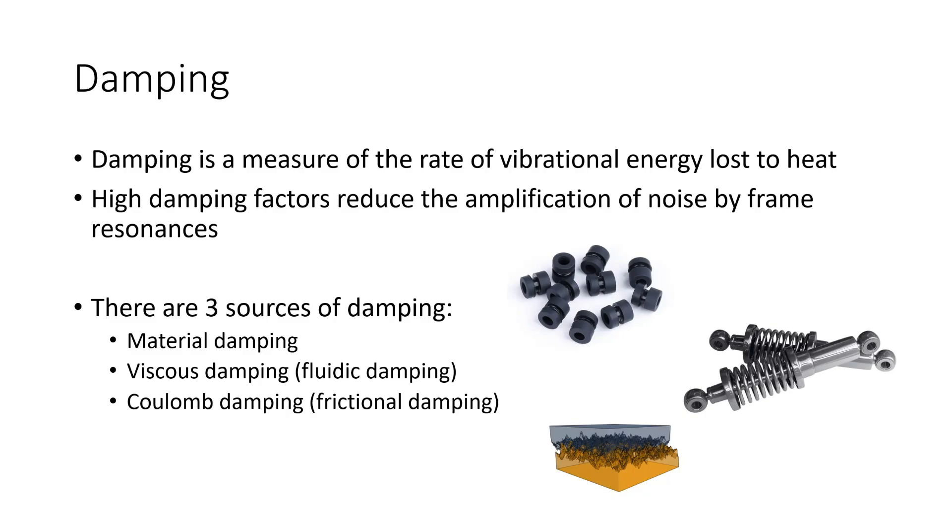An example of a material with a really low material damping coefficient would be something like the metal that you make a cymbal out of. You know, you hit a cymbal and it'll ring for a really long time. And that's because that material has a very low damping coefficient.